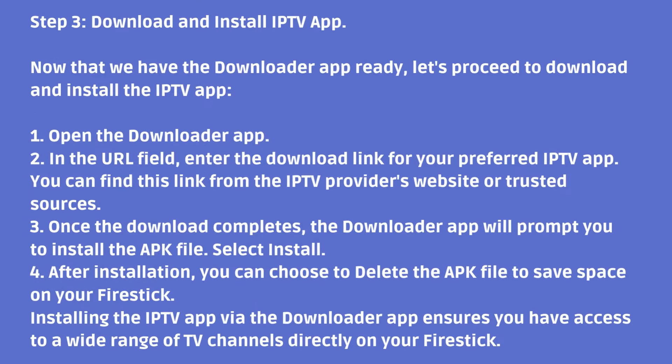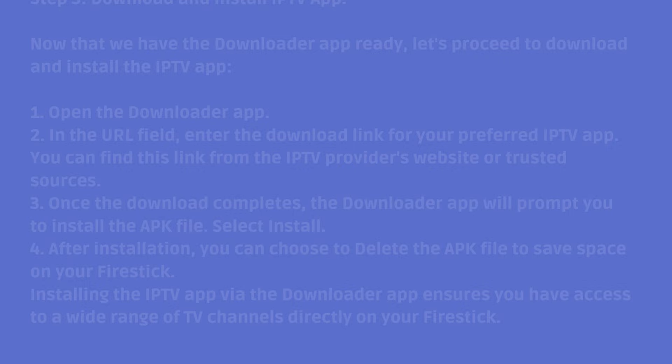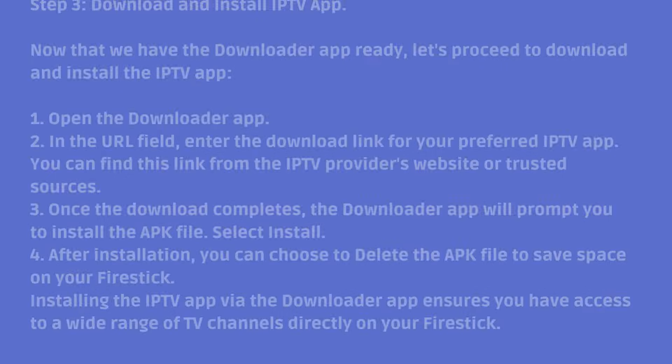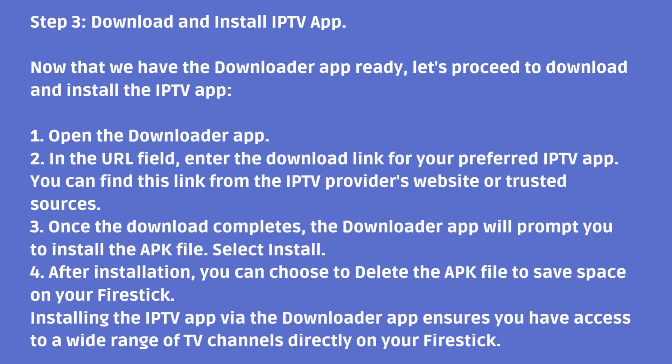Step 3: Download and install the IPTV app. Now that we have the Downloader App ready, let's proceed to download and install the IPTV app. Open the Downloader App. In the URL field, enter the download link for your preferred IPTV app — you can find this link from the IPTV provider's website or trusted sources. Once the download completes, the Downloader App will prompt you to install the APK file. Select Install. After installation, you can choose to delete the APK file to save space on your Fire Stick. Installing the IPTV app via the Downloader App ensures you have access to a wide range of TV channels directly on your Fire Stick.